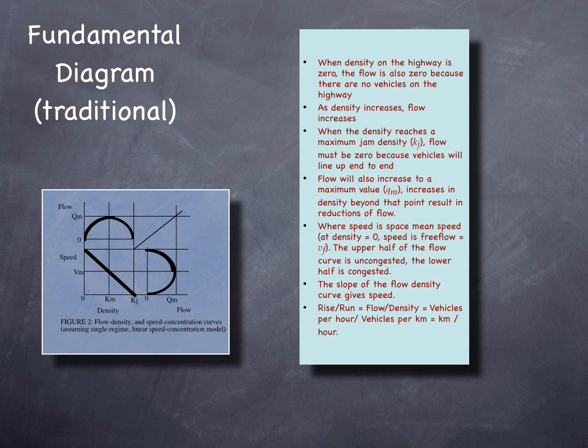There's some maximum flow. The vehicles want to follow each other at some time headway because drivers are driving vehicles, and they only feel comfortable if there were two seconds between each car, then the maximum flow would be 1,800 vehicles per hour. If they feel comfortable at one second between each car, the maximum flow would be 3,600. In reality, with human drivers, it's much closer to 1,800 than 3,600.